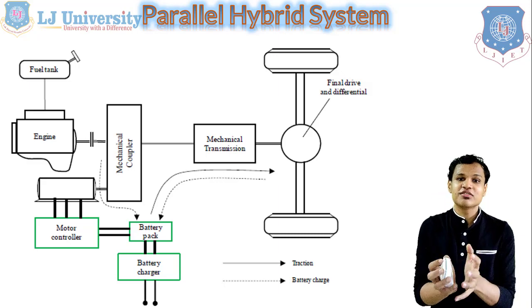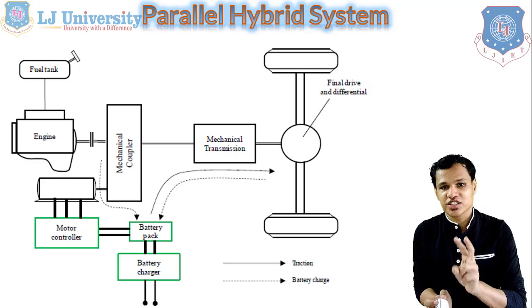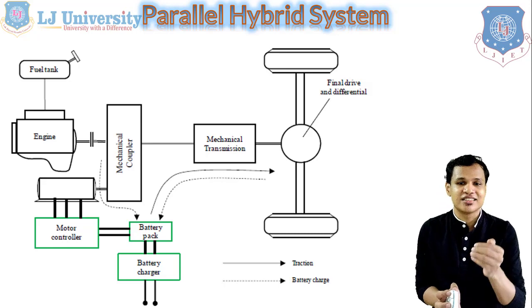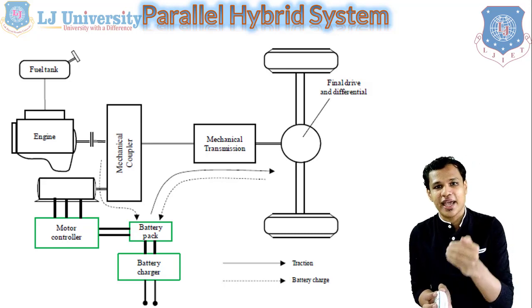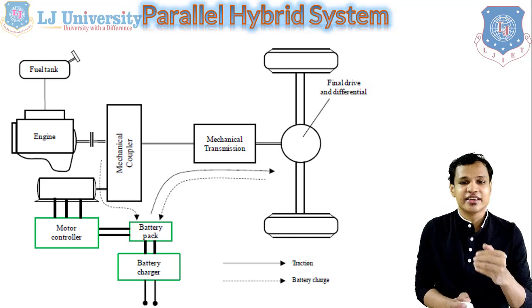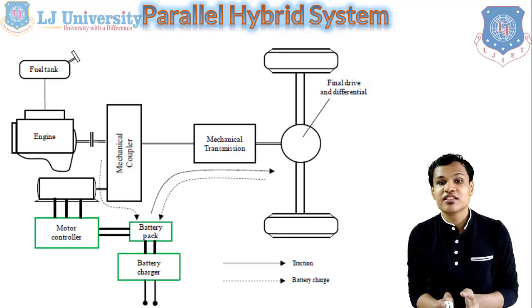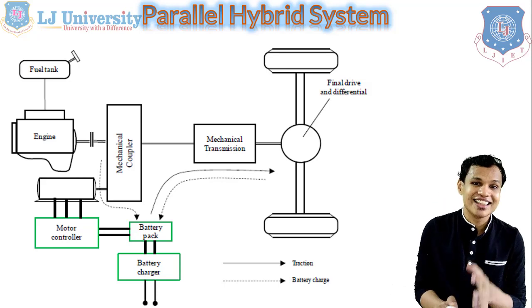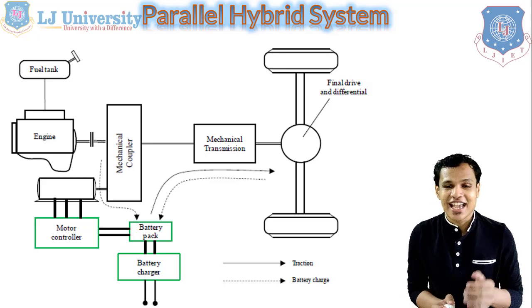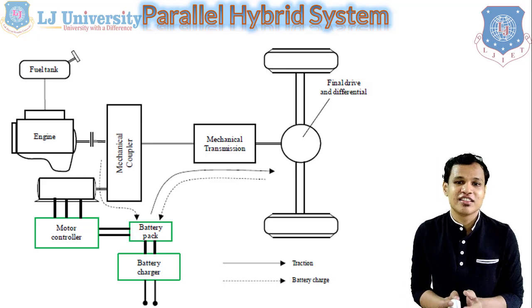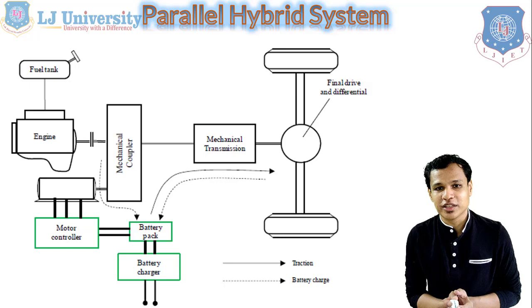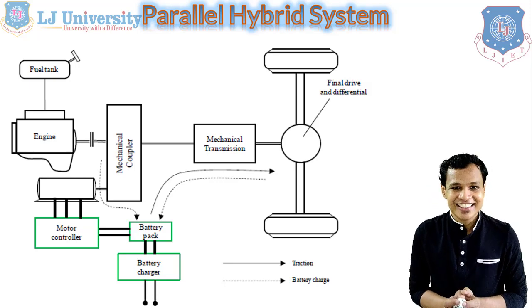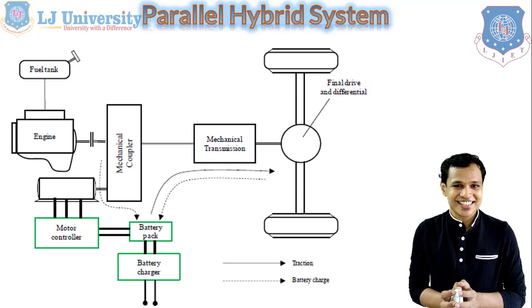So these were the four systems, of which only two — series and parallel hybrid — are practically used. In the next lecture we will see the power flow control in the case of the hybrid system, and further we will see about electric vehicles. Until then, thank you so much.